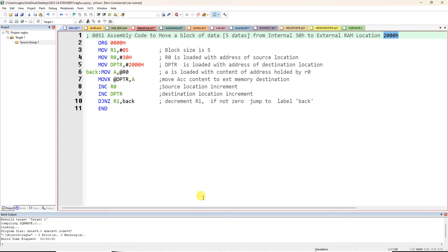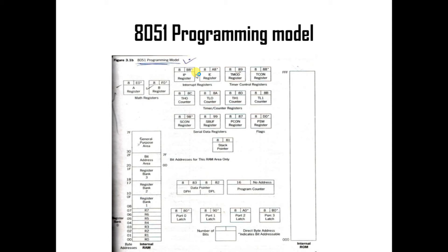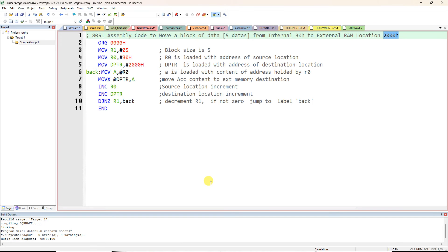In the 8051 programming model, R0 through R7 are all 8-bit registers. There are two 16-bit registers: the program counter, which holds the address of the next instruction to be executed — don't use this in your program — and DPTR (Data Pointer), divided into DPH (Data Pointer High) and DPL (Data Pointer Low). Use this 16-bit register for holding the destination address. So: MOV DPTR, #2000h.